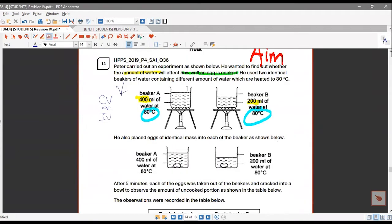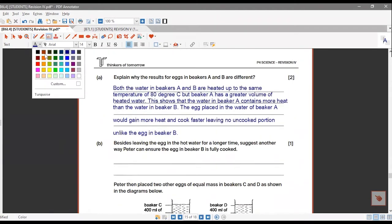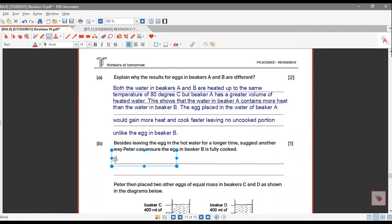What is the change variable in this experiment? The amount of water. In order for the egg in Beaker B to be cooked more readily, one interim measure I will straight away take is to add more hot water.